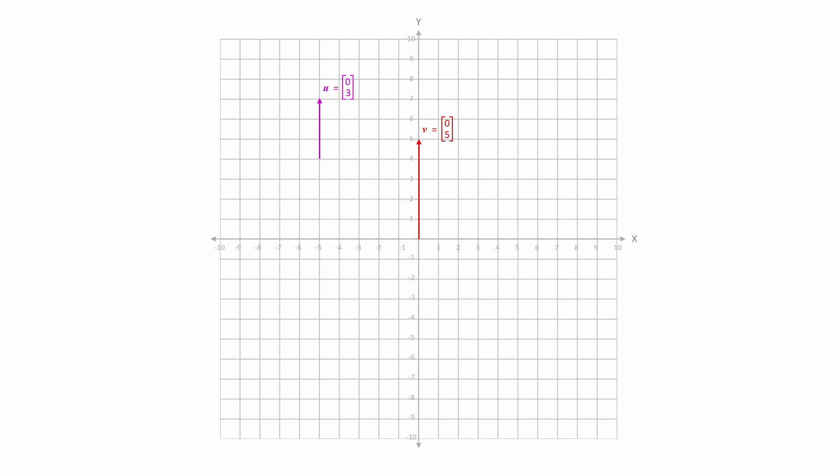Well, the answer is that the dot product allows us to compare the directions of two vectors. This has applications in computer graphics, machine learning and quantum computing. Consider these two vectors. They have different magnitudes, but they point in the same direction. This is easier to see when they have the same origin. Their dot product is 15.